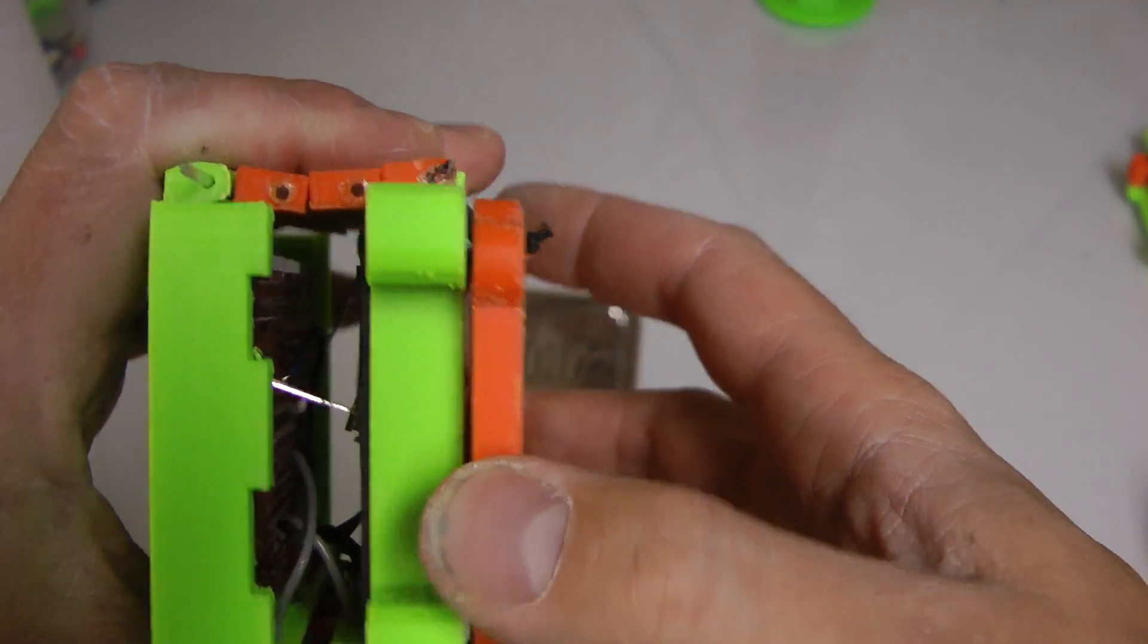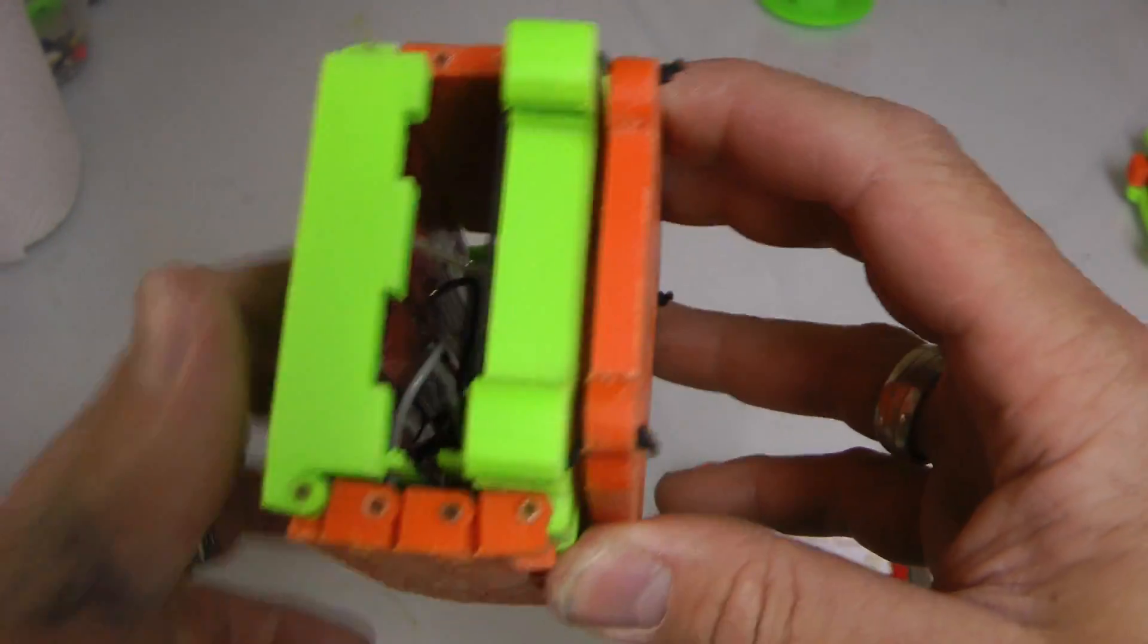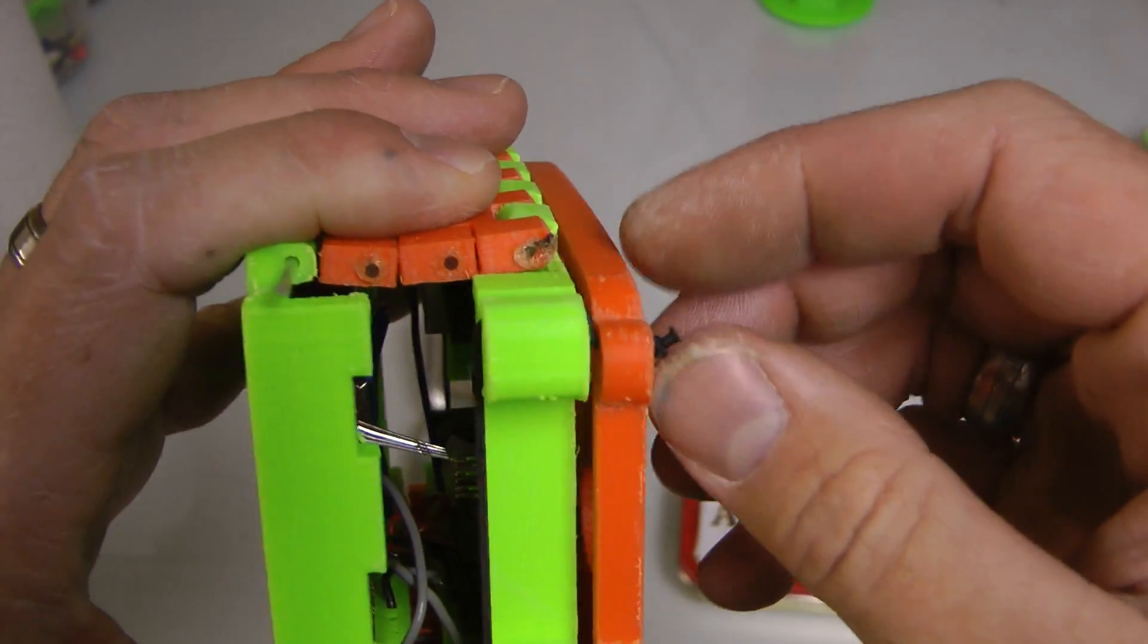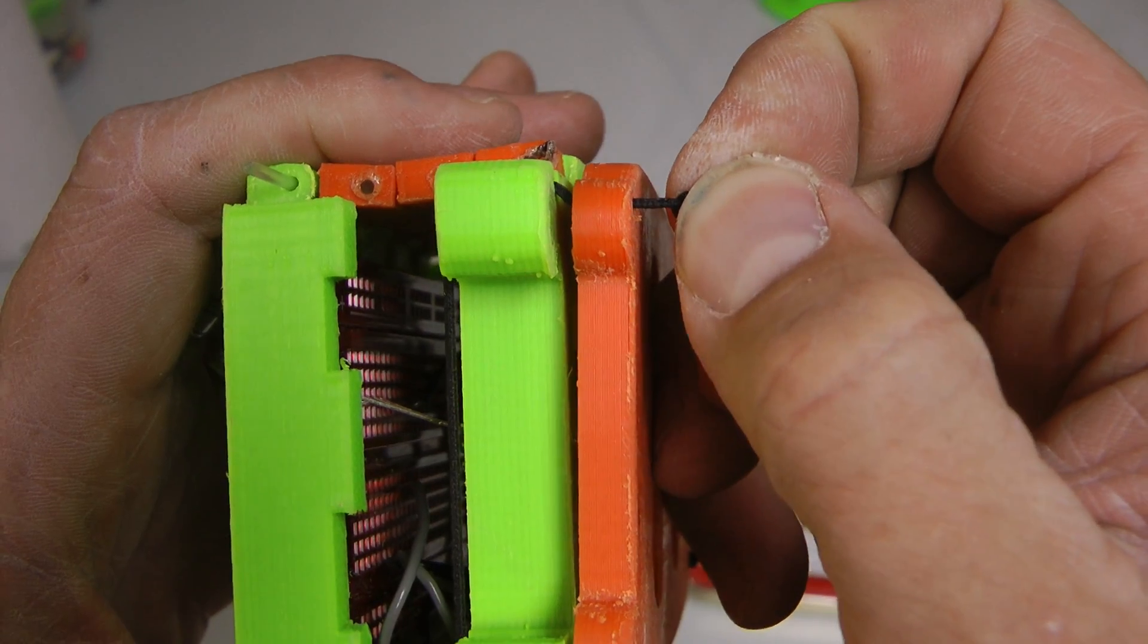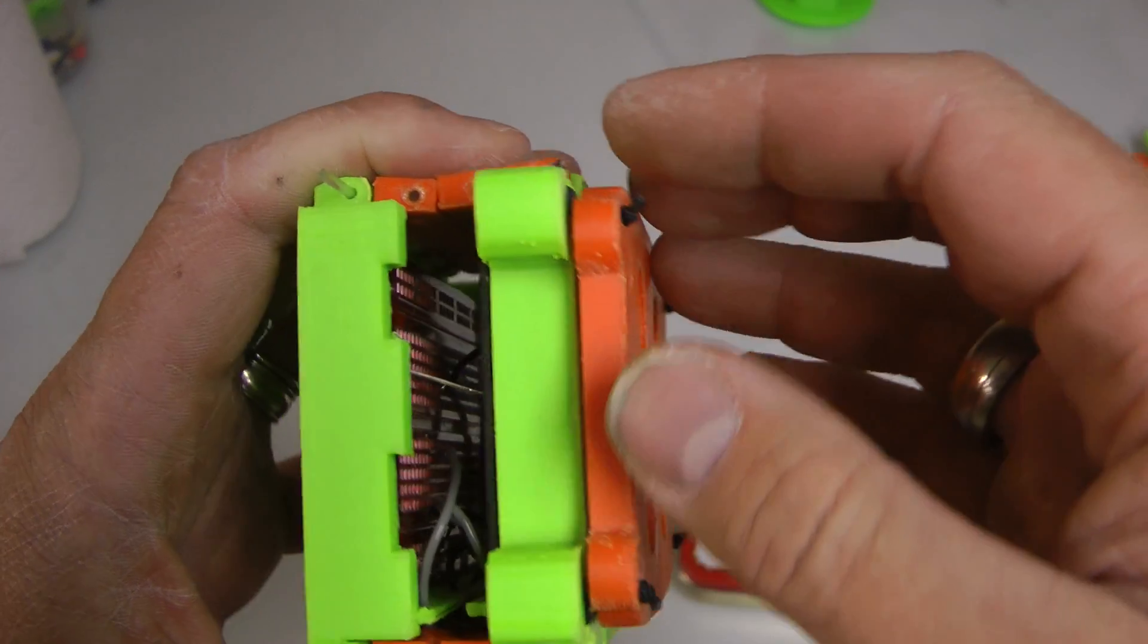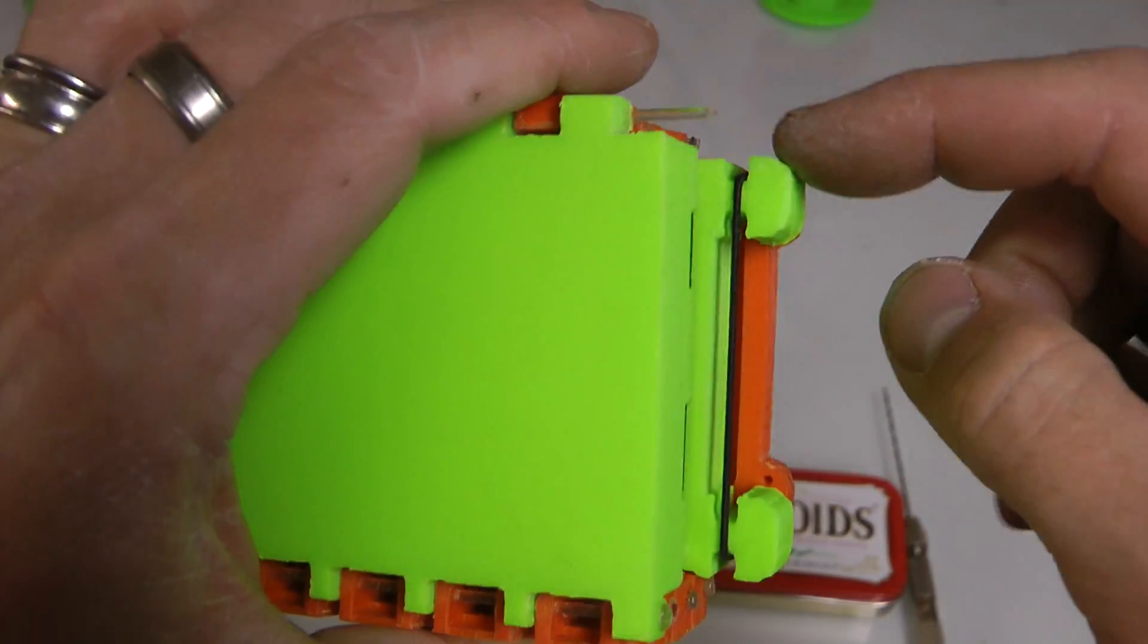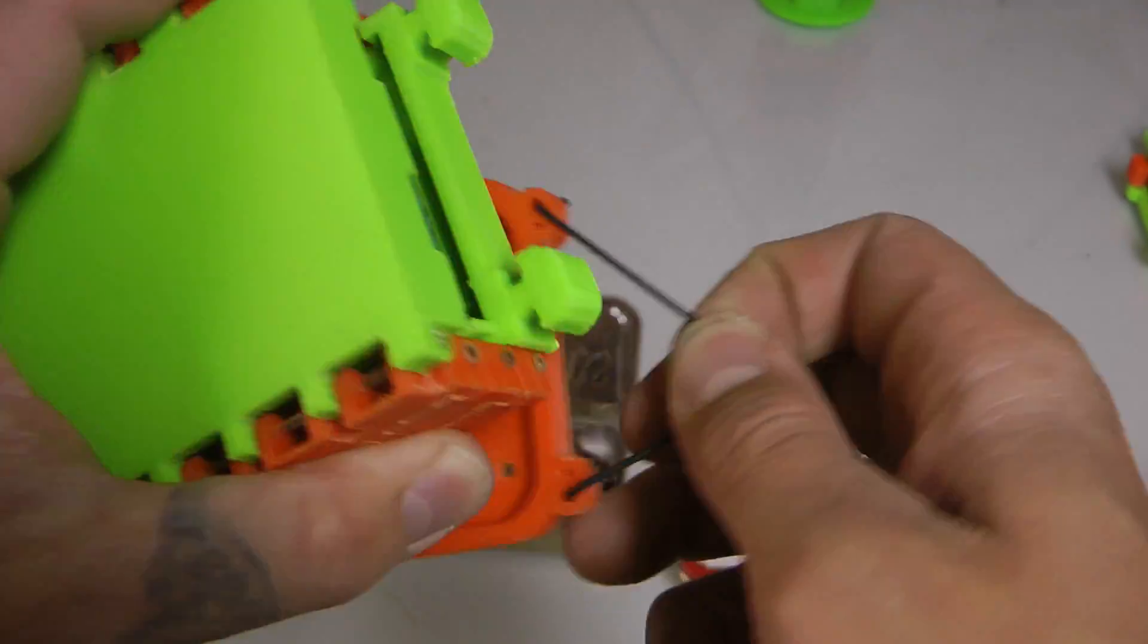Now, there's a piece of elastic, so you'll need some elastic. This can be found in any Hobby Lobby, Joanne's Fabric, whatever. It's about the size of a 1.75 filament. So just look for that size. It's pretty standard.